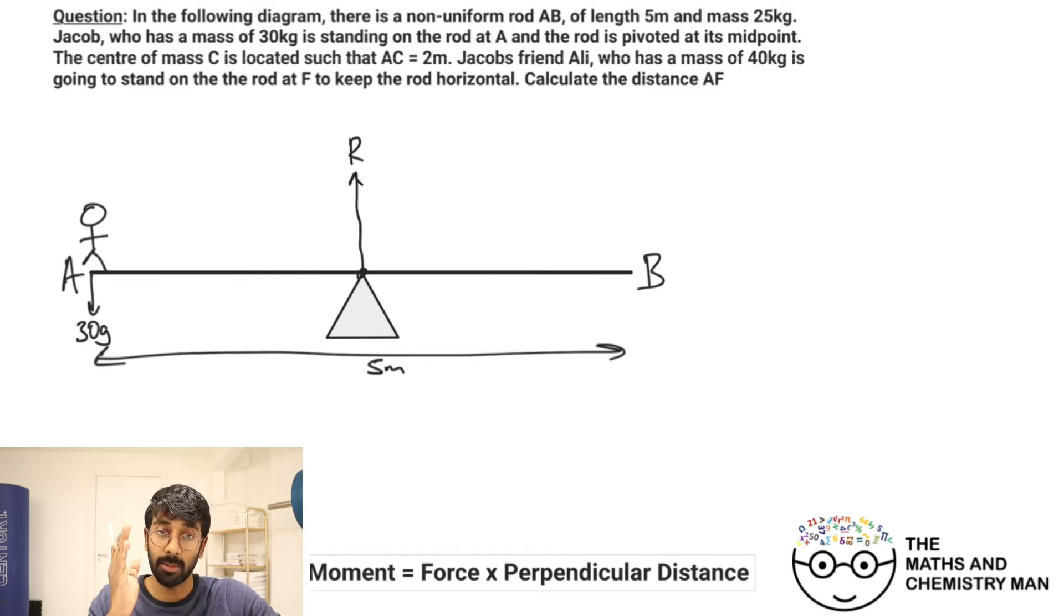We've got Jacob over there at A. He's got a mass of 30 kilograms, so we need to put a weight of 30g. The rod is pivoted at its midpoint, so it's pivoted here bang in the middle, like a seesaw. At this pivot, you're going to have a reaction force going upwards. The distance either side is 2.5 meters. The center of mass C is located such that AC is 2 meters.